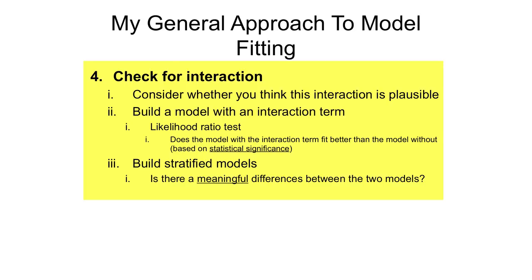The second option for assessing effect modification is to build stratified models. This works well for categorical variables but not continuous ones, because you would need to fit a model for each level. In our example with an age times smoking interaction, if age was continuous you'd have to fit a model for each age, which likely wouldn't work. But if you had a categorical age variable, you could fit a model for each age category. An advantage of stratified models is that we can calculate 95% confidence intervals for the effect in each stratum, which we can't easily do with an interaction term in the output.